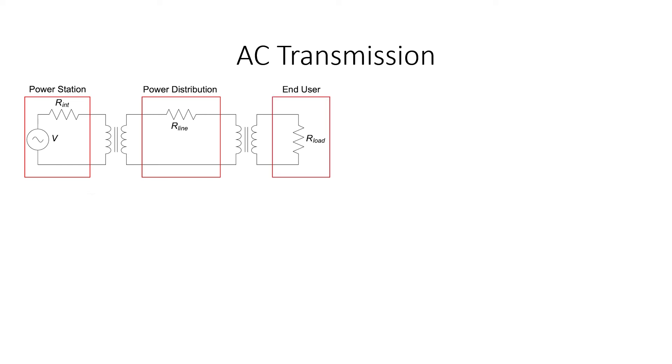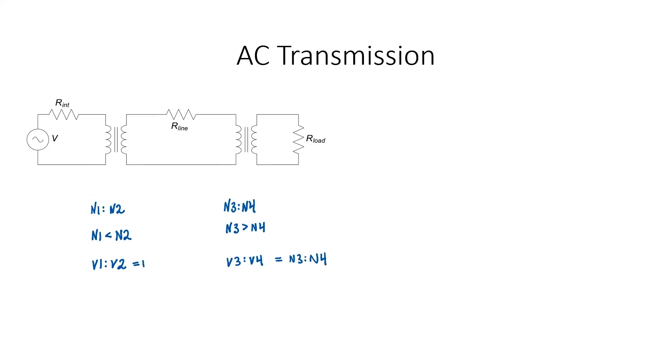Let N refer to the number of turns of wire around that transformer. So N1 in this first example represents the number of turns around the primary and N2 represents the number of turns around the secondary. Since a turbine would typically operate at a lower voltage than the transmission line, we would have fewer turns on the primary than the secondary. The ratio of turns corresponds exactly to the voltage ratio of the transformer. Near the load, we expect the voltage to be a lot lower than that of the power distribution system. Therefore, we expect to have a larger number of turns on the primary than the secondary.